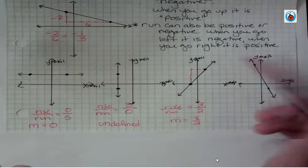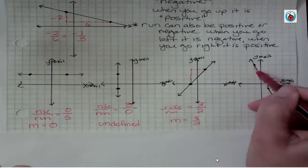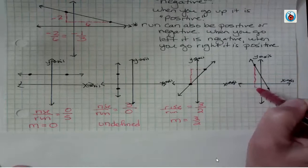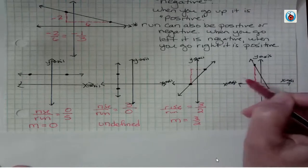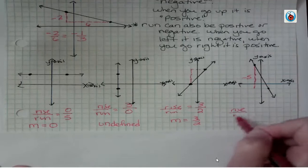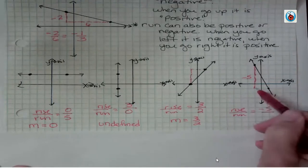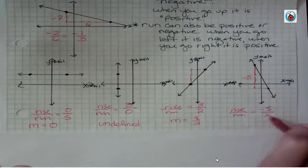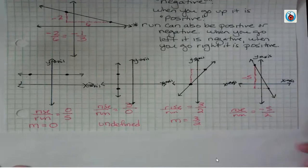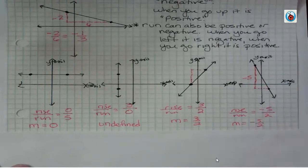And this last one: from one point to the next, I went five places, but I actually went down, so that's negative five. Then I went two over. So I have negative five-halves. I can't reduce that, and I don't want to change it to a mixed number — I just leave it as negative five-halves.